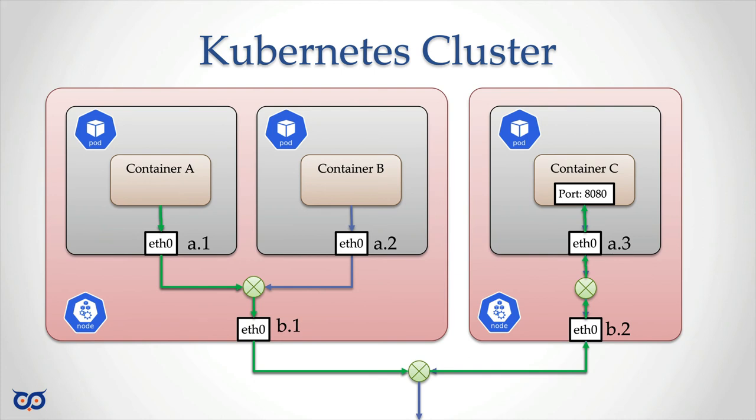So Kubernetes unifies all that and makes it super easy. Now what is actually happening behind the scene? We have the node, and what makes a node is the kubelet service, which is that piece of code running on each node. It makes your physical machine become a Kubernetes node once the kubelet service is running there. The kubelet service gets instruction from the control plane of Kubernetes.